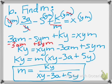Divide both sides. We get m is equal to ky over xy minus 3a plus sy.